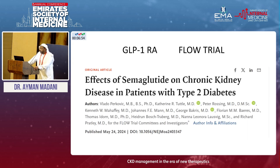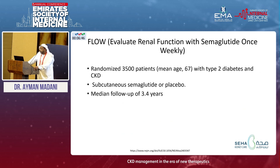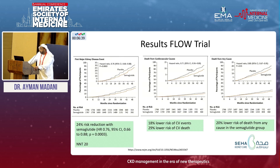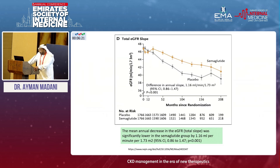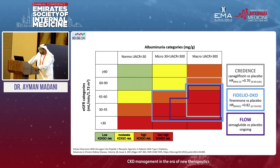Recently the FLOW trial came out — the effect of semaglutide on chronic kidney disease in patients with type 2 diabetes. 3,500 patients were randomized with type 2 diabetes and CKD, with a follow-up of 3.4 years. Outcomes were very positive: 24% risk reduction with semaglutide, 18% lower risk of cardiovascular events, 29% reduction in cardiovascular death, and 20% lower risk of death from any cause. The mean annual decrease in eGFR slope was also significant. The FLOW and FIDELIO studies indicate that many advanced CKD patients can benefit from these two drugs.